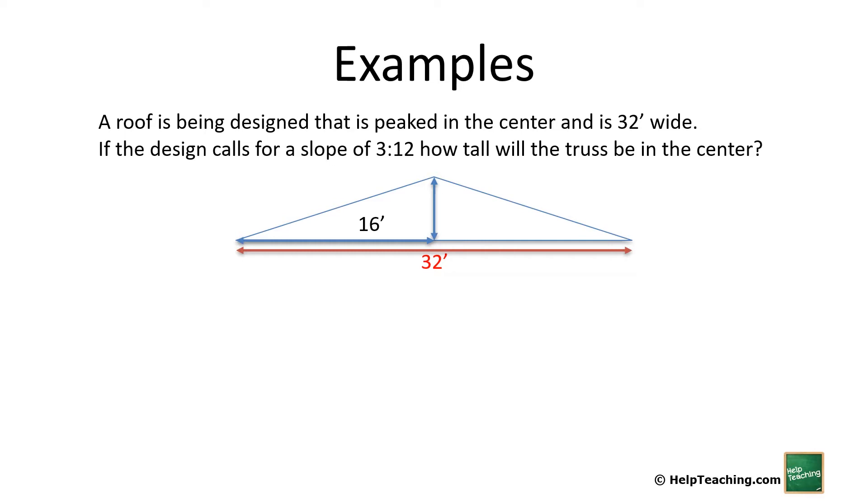Again, roof is being designed that's peaked in the center, is 32 feet wide this time with a slope of 3:12. So again we set this up exactly the same way: 3:12 is our reference ratio and x/16 is our real-life ratio. 16 times 3 divided by 12 is 4 feet, so it needs to be 4 feet high in the center.